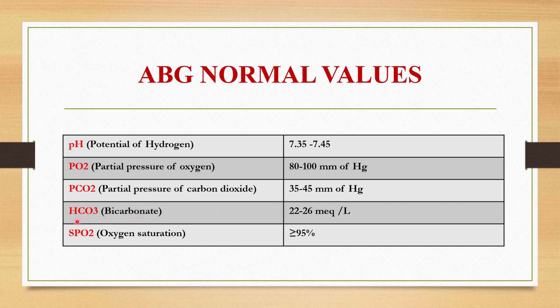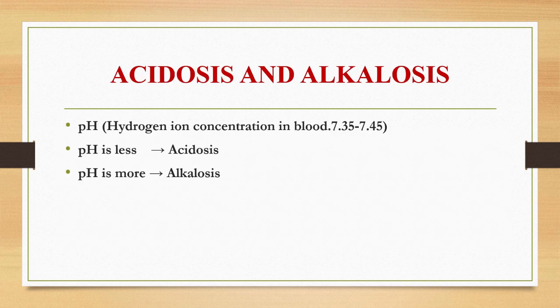Next one is bicarbonate, HCO3. This is the byproduct of our body's metabolism, and the normal value ranges from 22 to 26 milliequivalents per liter. The last one is SPO2, oxygen saturation, and the normal value is greater than or equal to 95%. Now you have a clear idea about what an ABG is and what are all the normal values of ABG.